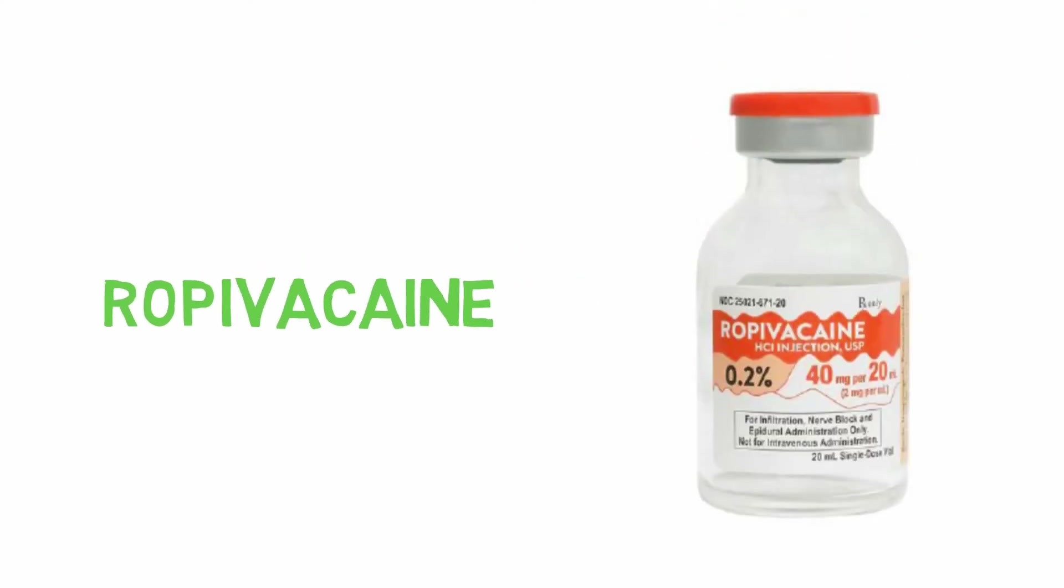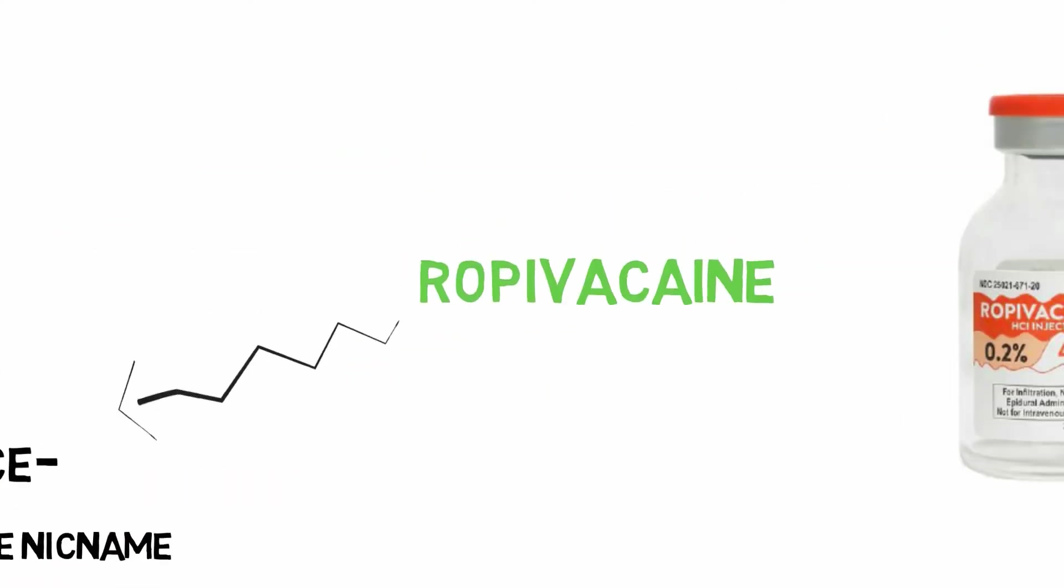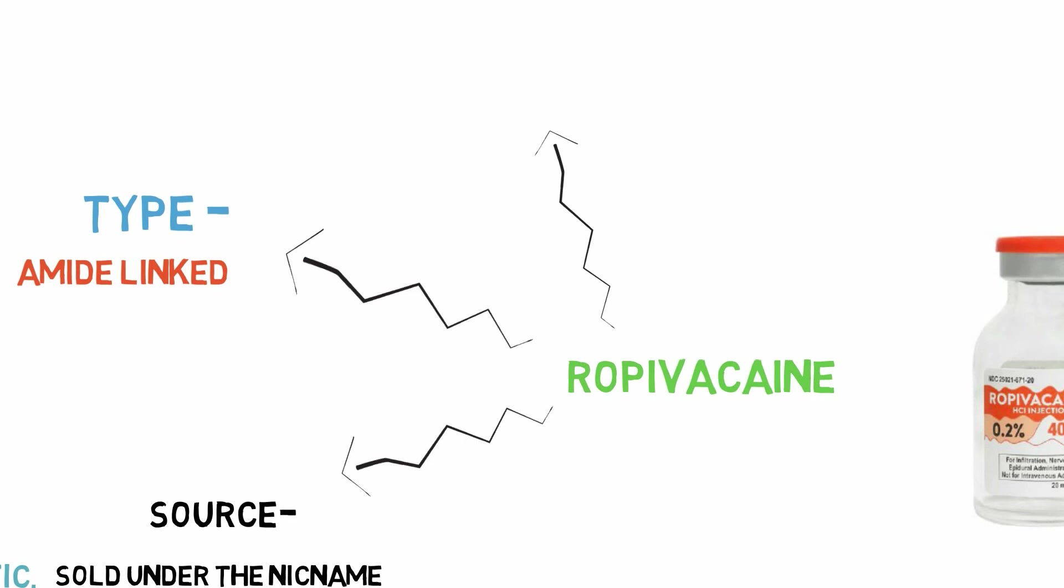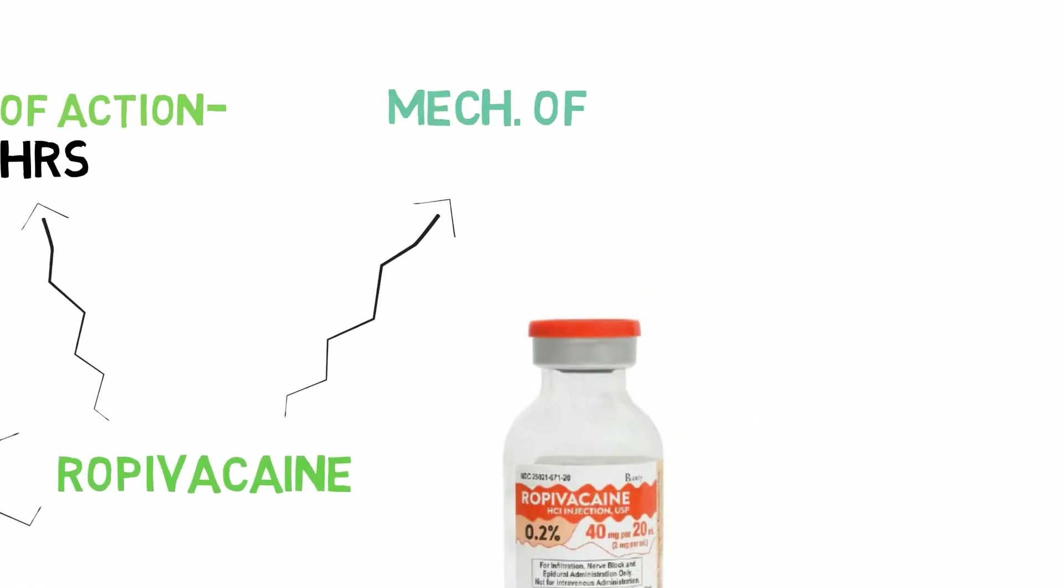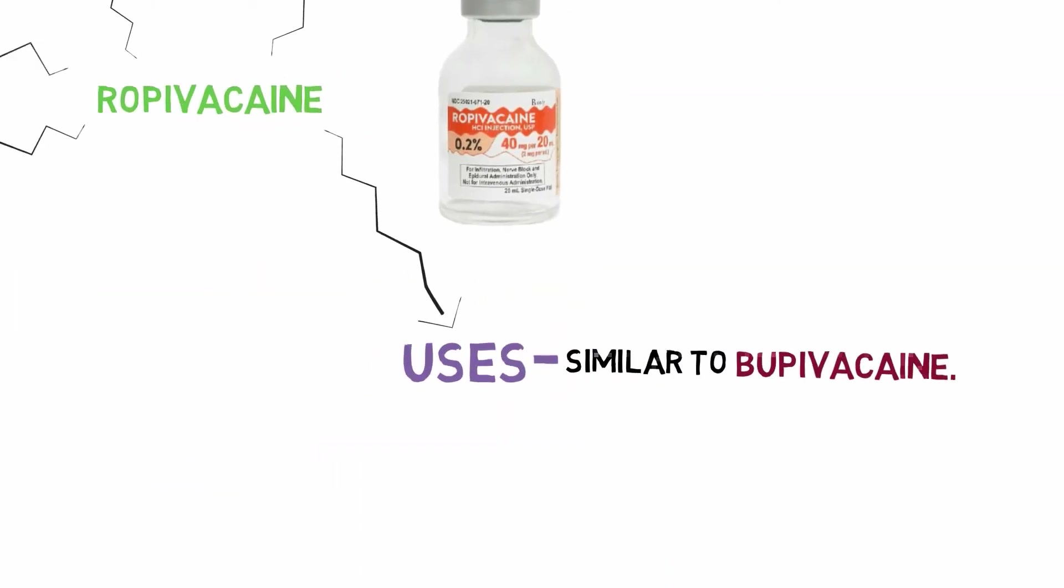Ropivacaine. Source: synthetic, sold as brand name Naropin. Type: amide-linked. Duration of action: 2 to 6 hours. Mechanism of action: same as local anesthetics. Uses: similar to bupivacaine. Complications: less cardiotoxic than bupivacaine.